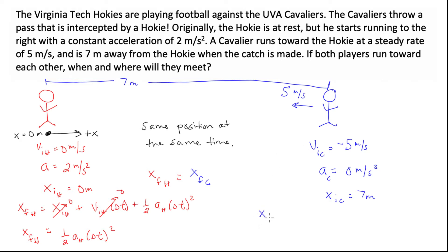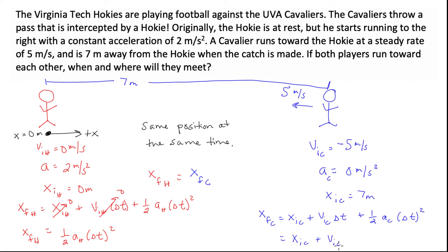Now I do the same thing for the Cavalier. Starting with the generic equation: x-final for the Cavalier equals x-initial for the Cavalier plus v-initial for the Cavalier times delta-t plus one-half times the Cavalier's acceleration times delta-t squared. The initial position is 7 meters, so that stays. The initial velocity is minus 5 meters per second, so that stays. But the Cavalier has no acceleration, so the last term drops off. We now have our two position equations.